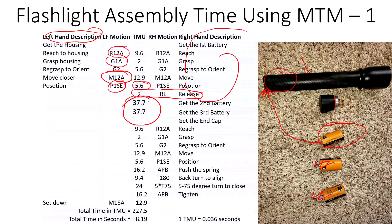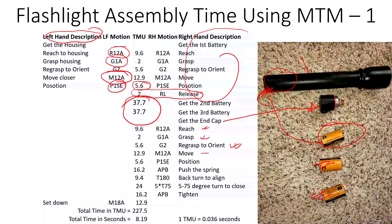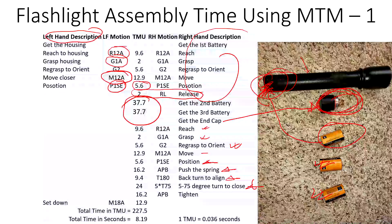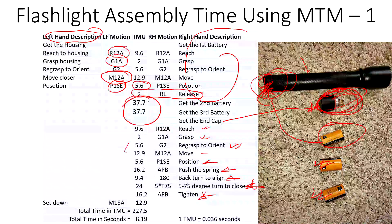After the batteries, we get the end cap — reach for it, grasp it, orient it so it can go into the housing, then move while orienting, and position it on the end of the housing. Then I push the spring and do a bit of back-turn to align it on the housing. This piece is not so well designed — it's a little tight — so it took about five 75-degree turns to close and tighten the whole assembly.